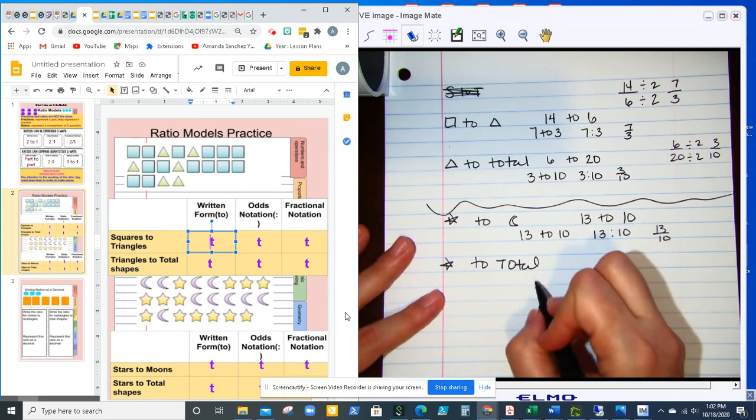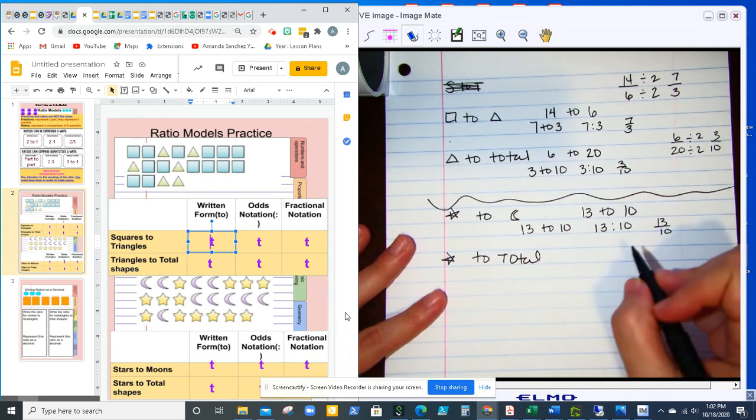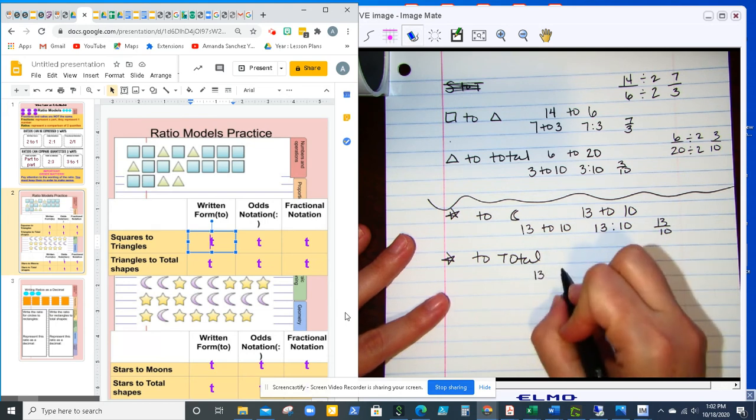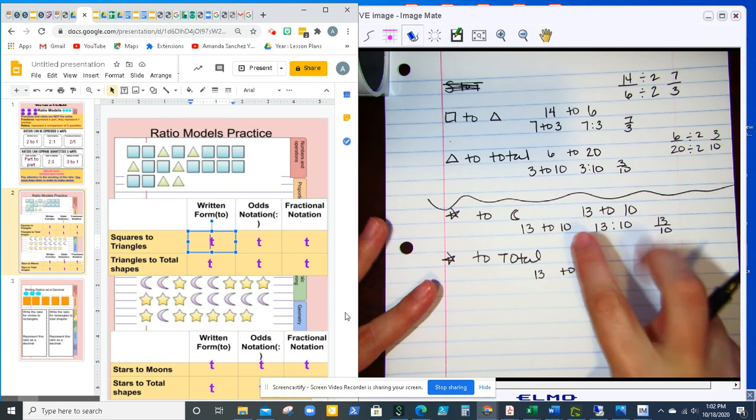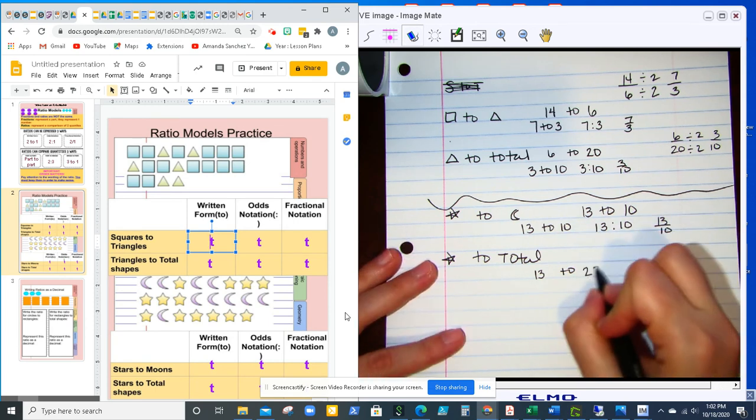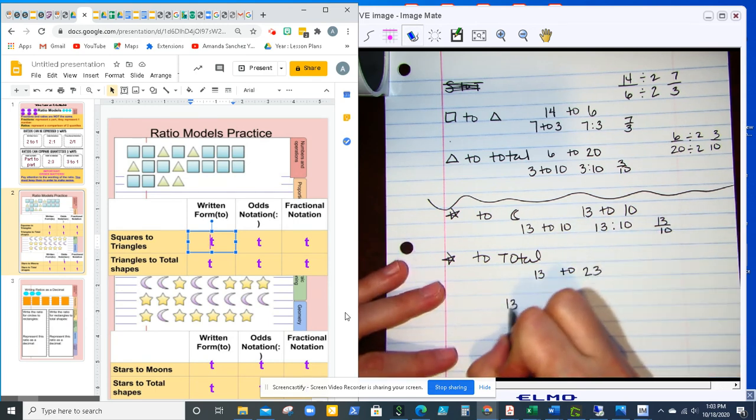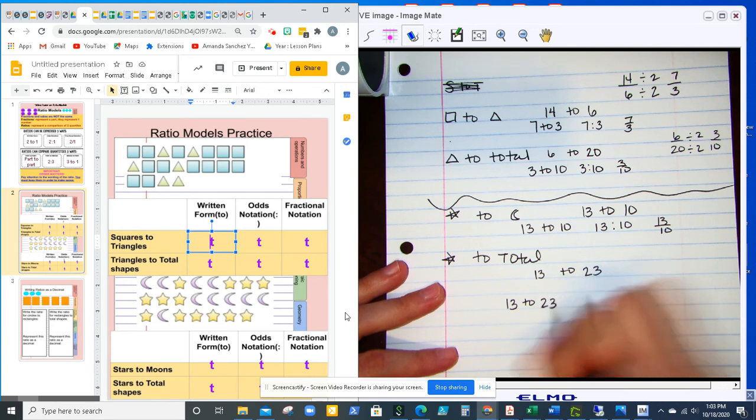The last one is stars to total. So stars are 13, and then the total would be both of the shapes put together. So 13 plus 10 would be 23. So now I'm going to write it as 13 to 23, 13 colon 23, and then 13 over 23.